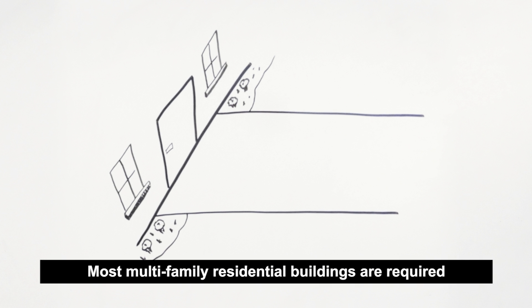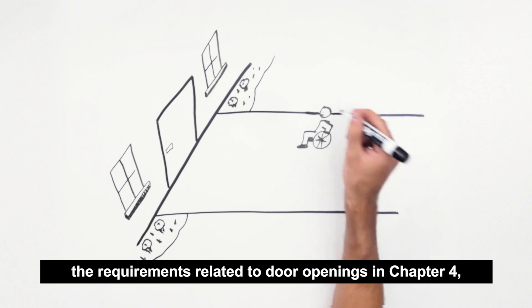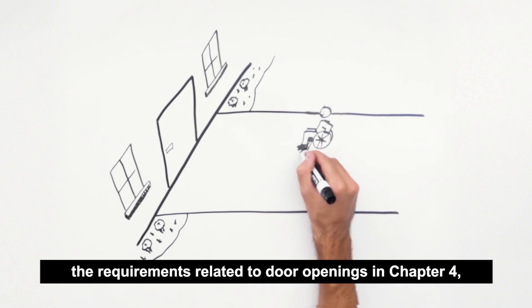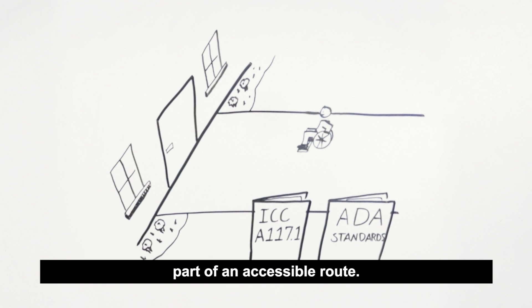Most multifamily residential buildings are required to comply with the Fair Housing Act. States or local jurisdictions may have their own accessibility standards as well. ICC A117.1 and the ADA Standards include most requirements related to door openings in Chapter 4, with separate sections for manual doors and automatic doors. These requirements also apply to gates that are part of an accessible route.